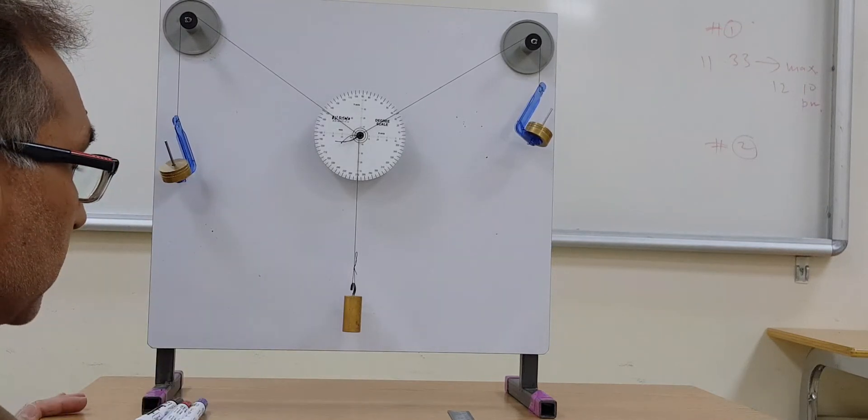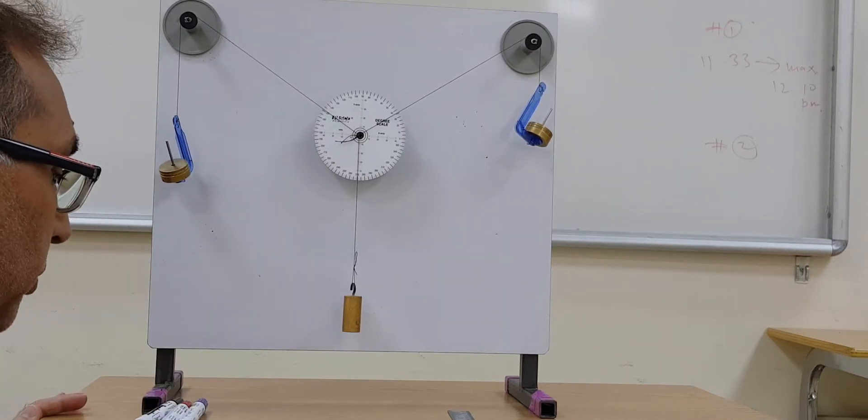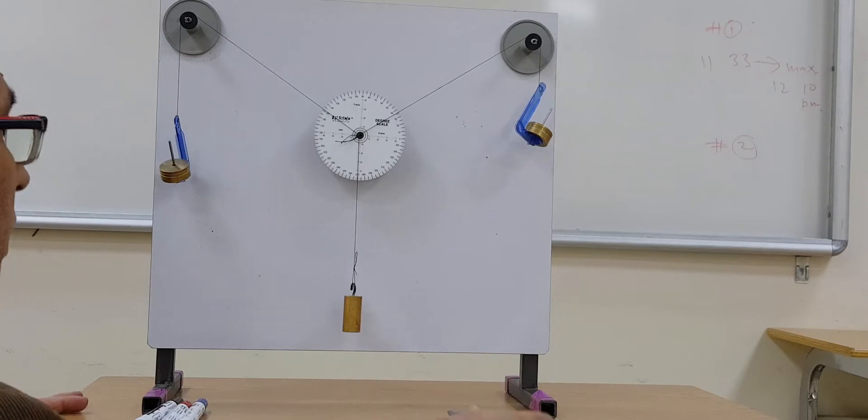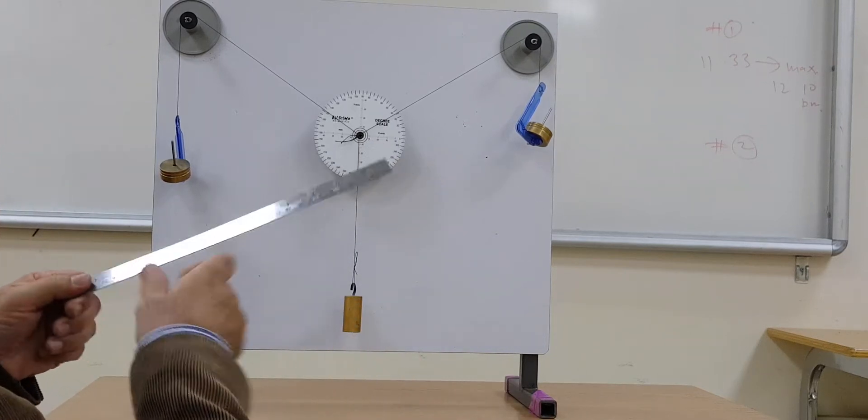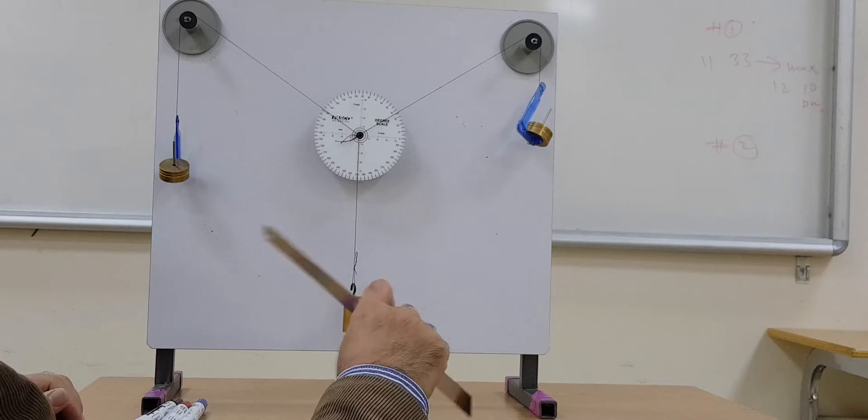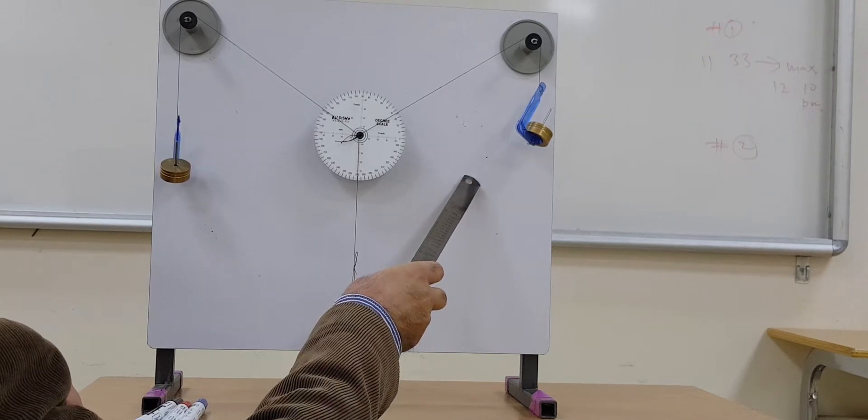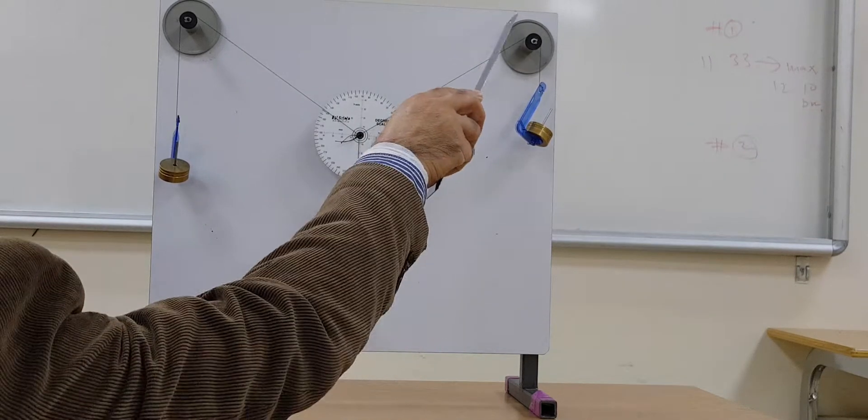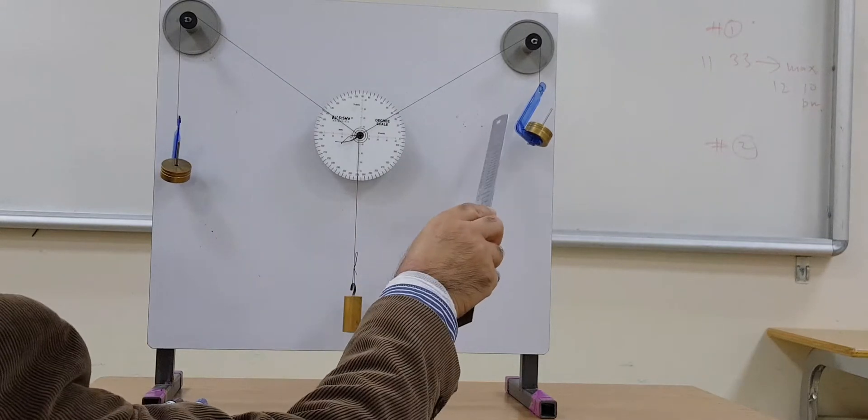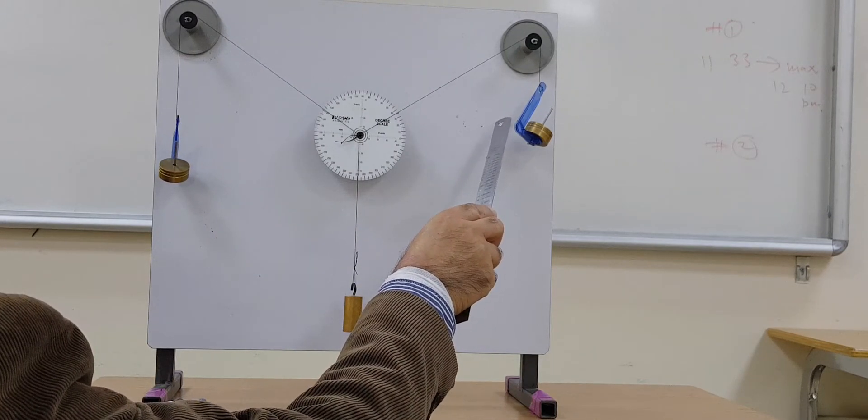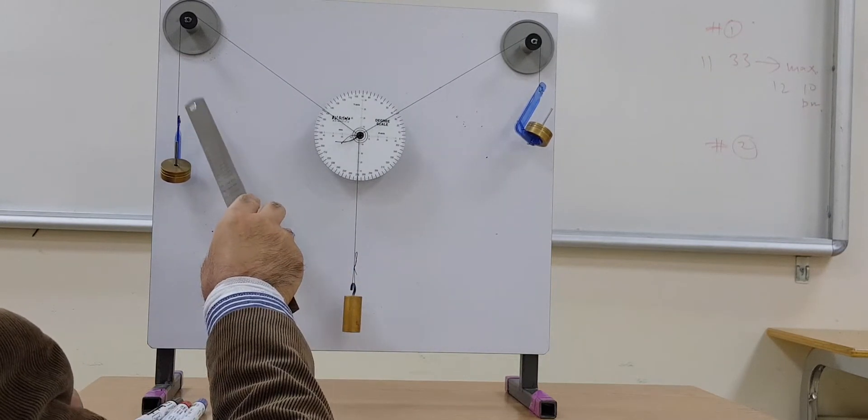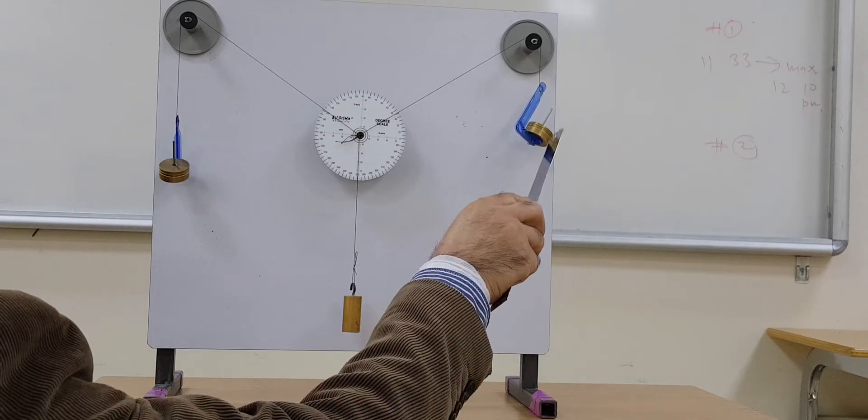What we discussed in the theory part of this experiment, we are now going to do. You can see all this arrangement: this is the magnetic bolt, these are two pulleys, this blue holder is the mass holder, another holder here, and these are the different masses.